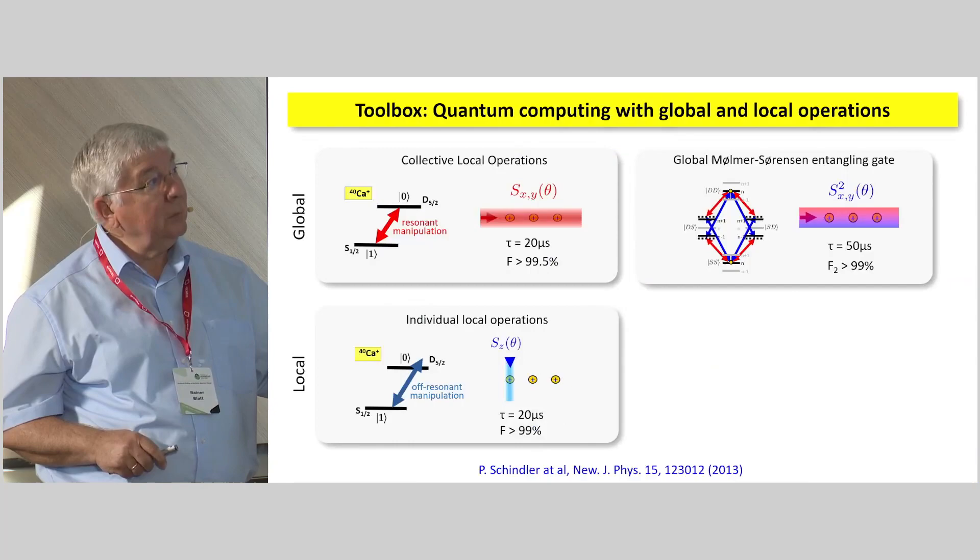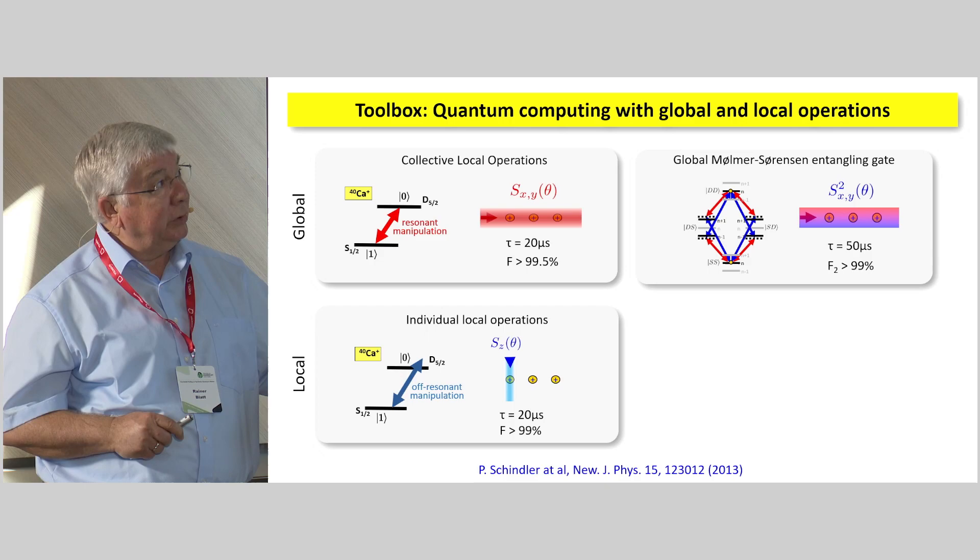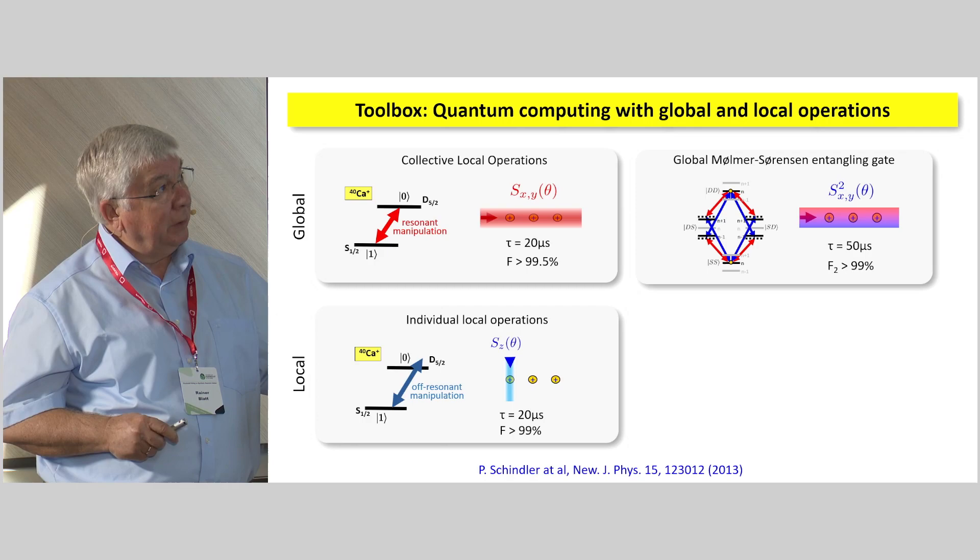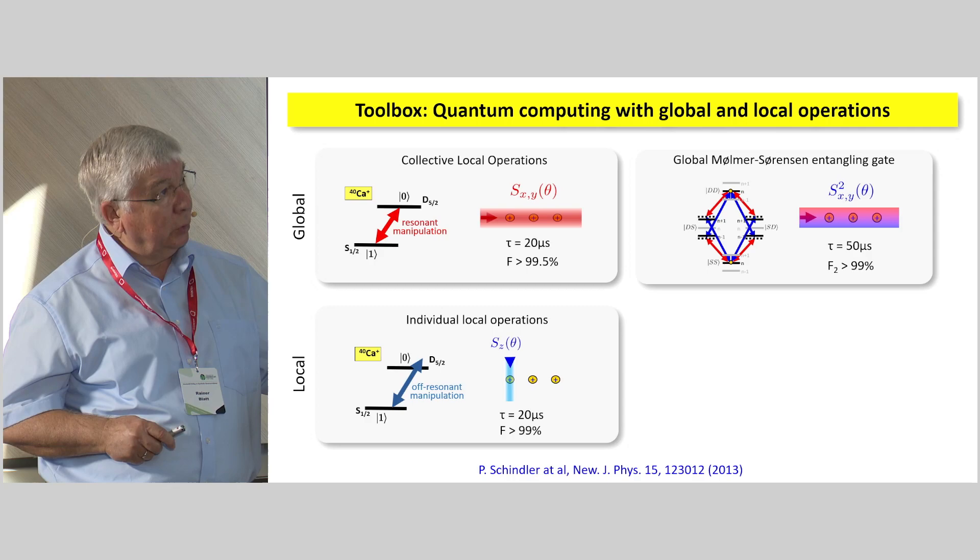Now we are ready to do quantum information processing. We just have a bunch of toolbox operations. We can resonantly manipulate the ions, as indicated just before. But we can do that also simultaneously with the entire string by shining the line along the axis. And we can do so by tilting this about the x, y axis, about the angle theta, with very high fidelity in a short amount of time.